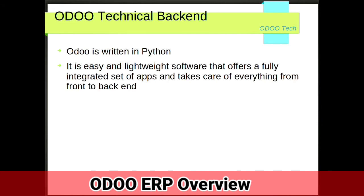Now for the technical background: Voodoo applications are written in Python modules in the backend. It is a lightweight software that offers a fully integrated set of apps taking care of everything from end to end. The technical stack includes Python modules, PostgreSQL database, XML for designing views, CSS, and HTML tags. Models are Python-defined classes and functions, and all data is maintained in a PostgreSQL database.